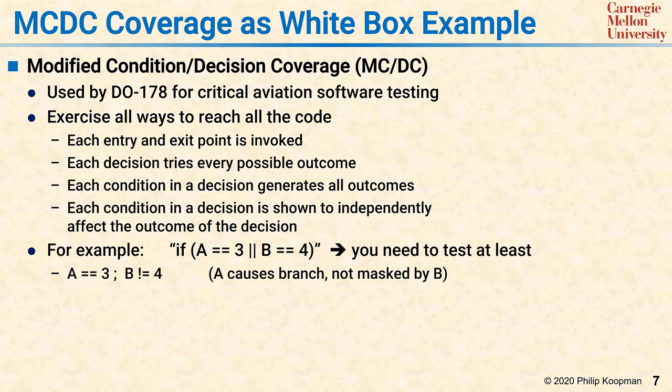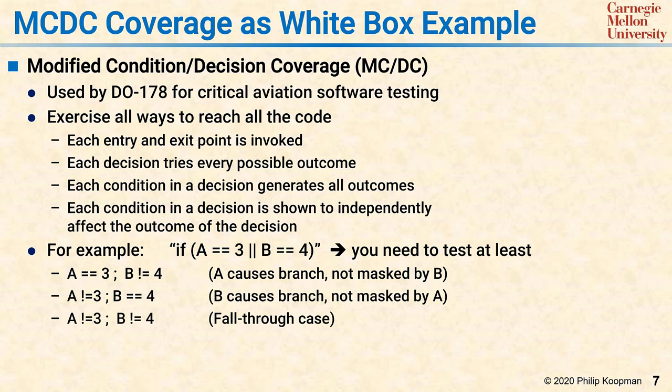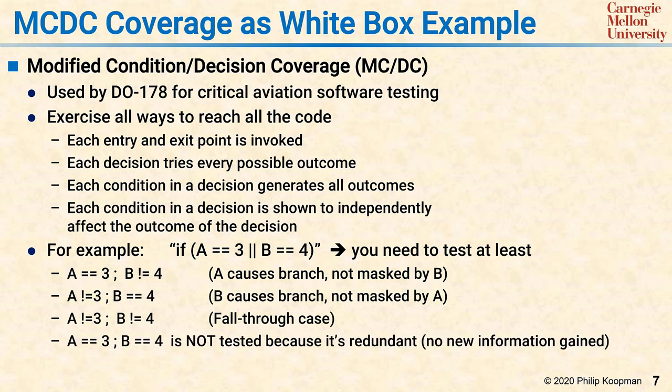In branch coverage you do the if and the else. But in MCDC coverage, if there are five different ways the if could be true, you need to try all five different ways and also show the else could happen. As an example, the condition clause 'if A equals 3 or B equals 4': for branch coverage you just need to test that it was true and that it was false. For MCDC coverage, you have to show: if A is 3 and B is not 4, then A activates the true statement; if A is not 3 and B is 4, then B activates the true statement; and if both A is not 3 and B is not 4, the else can be activated. You do not have to try A equals 3 and B equals 4 because that's already been covered by the first two cases.